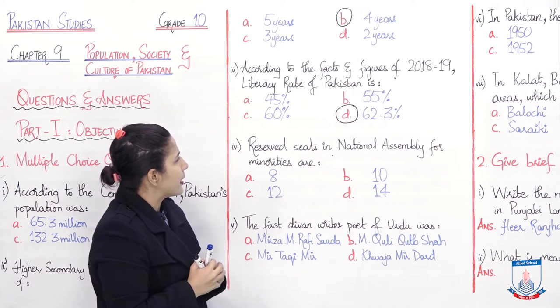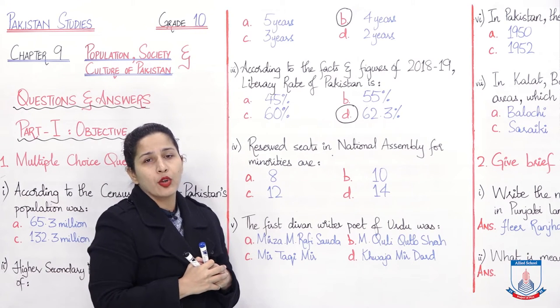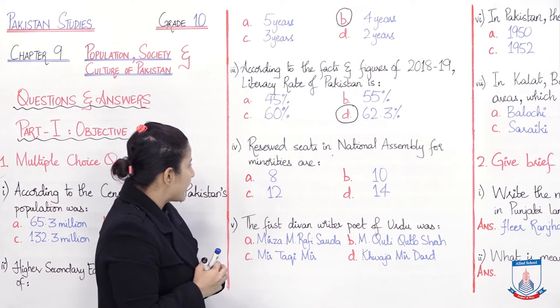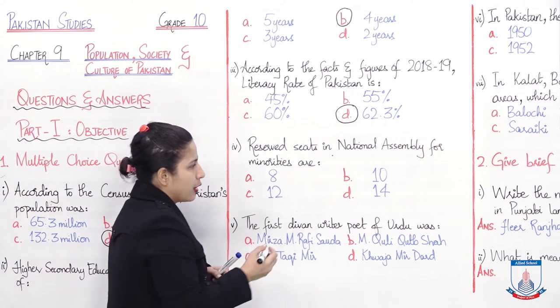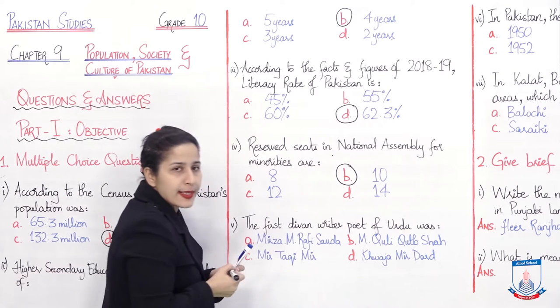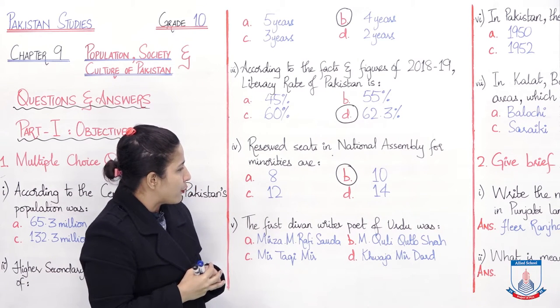Fourth question: Reserved seats in national assembly for minorities are? How many seats are reserved for minorities in the national assembly? There are four options: 8, 10, 12, and 14. By fact we know that in the national assembly, 10 seats are reserved for minorities.